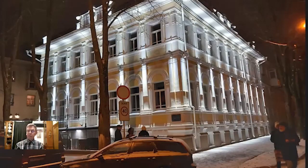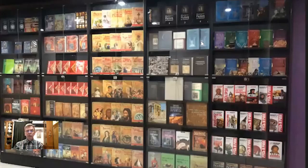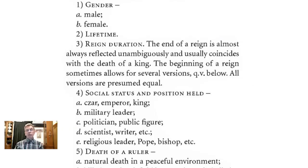In our previous conversation, you talked about your proprietary methods of dating ancient and medieval events, including the method of form codes. Today, I would like to ask you to talk about the application of this method using the example of duplicates of the most famous historical figure, Jesus Christ. Our current podcast is dedicated, once again, to one of the halls of our museum in Yaroslavl, which contains a lot of information about the new chronology. As an important theme in our museum, there is a special hall that discusses Andronikos Christ and the duplicates associated with him.